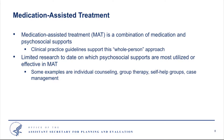A person's use of opioids has become serious enough to result in a clinically and functionally significant impairment, such as health problems, disability, and failure to meet major responsibilities at work, school, or home. They've lost control of their opioid use and engaged in risky use, placing them at greater risk for overdose.